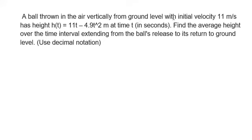With initial velocity 11 meters per second, the ball has height h(t) = 11t - 4.9t² meters at time t in seconds. Find the average height over the time interval extending from the ball's release to its return to ground level.